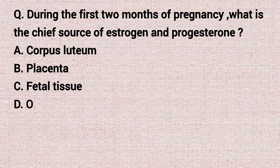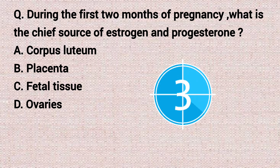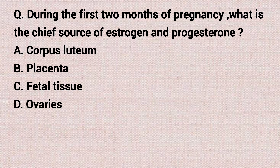The next question: during the first two months of pregnancy, what is the chief source of estrogen and progesterone? Option A: corpus luteum. Option B: placenta. Option C: fetal tissue. Option D: ovaries. The correct answer is option A, corpus luteum.